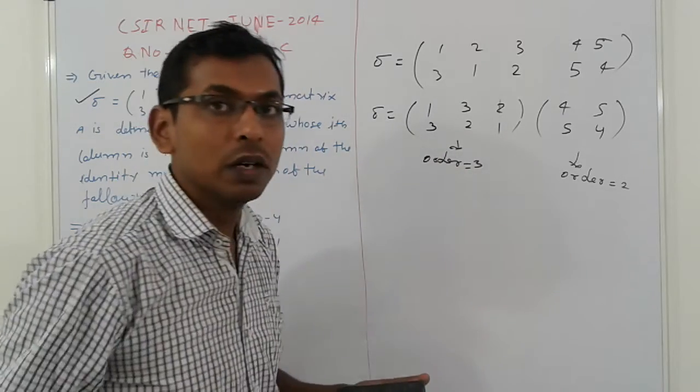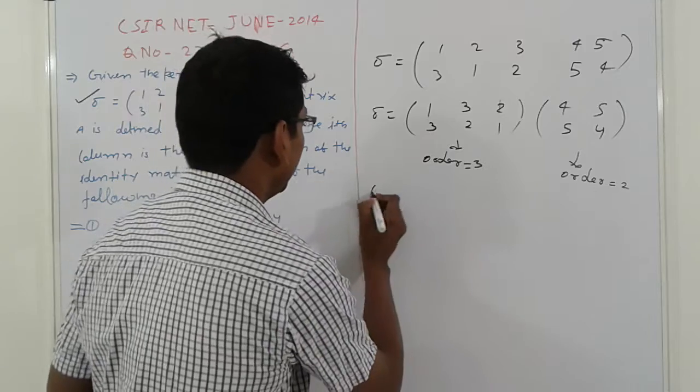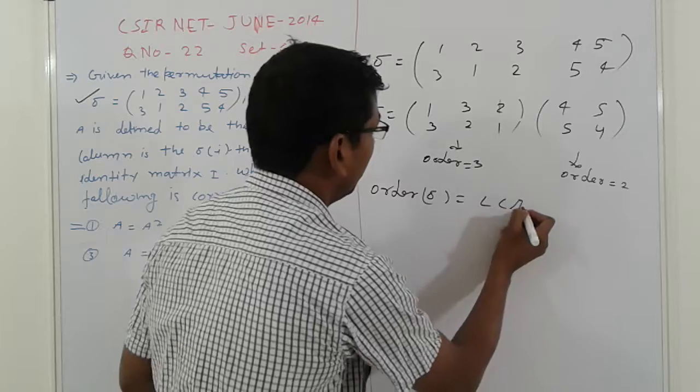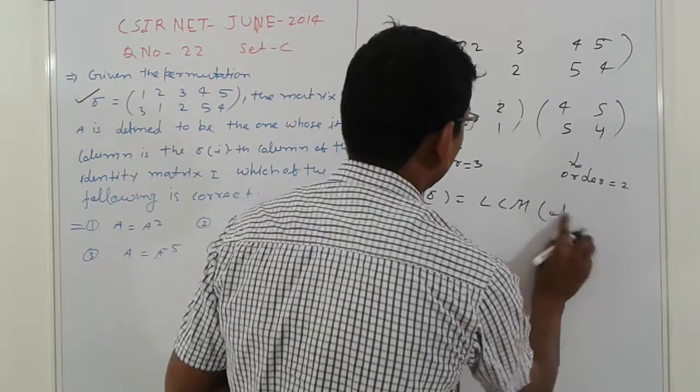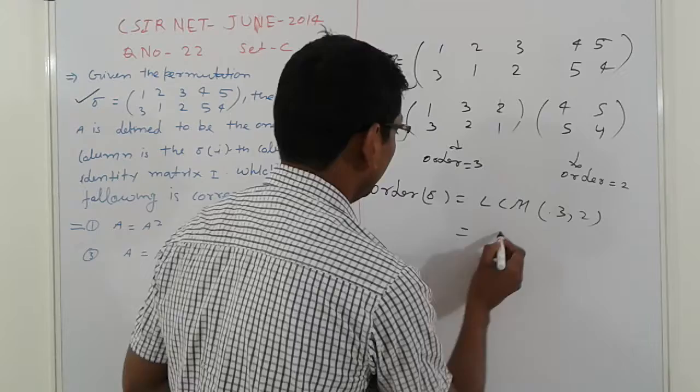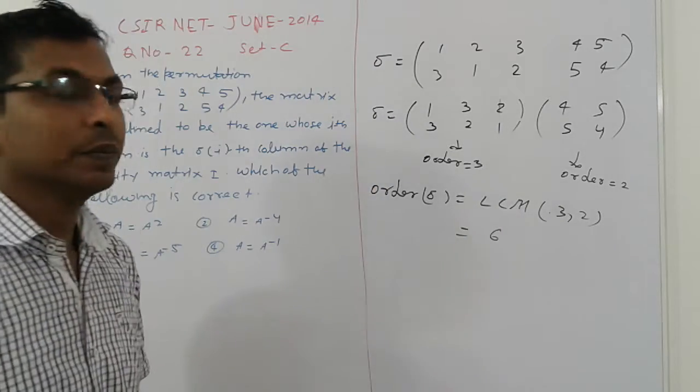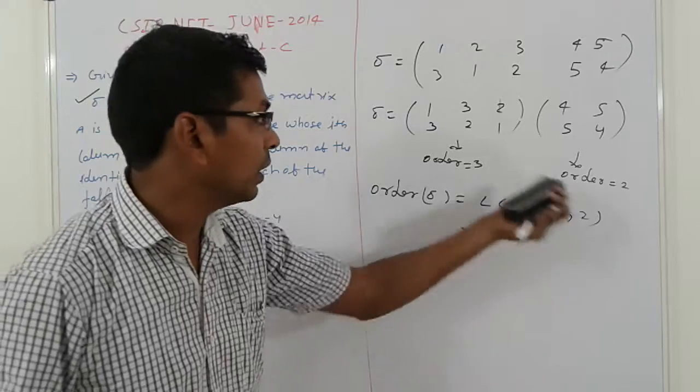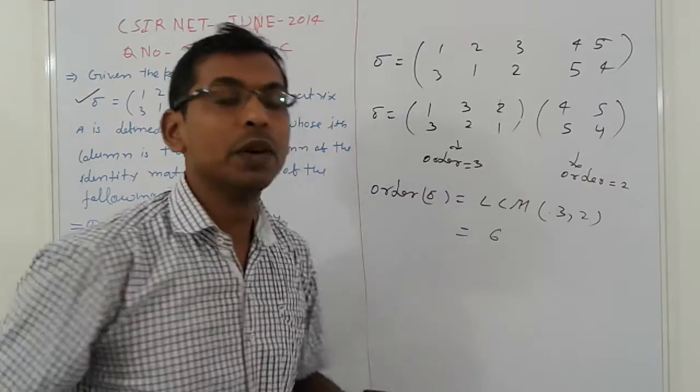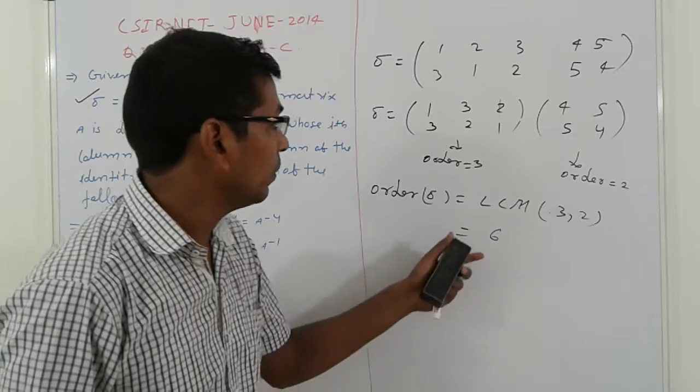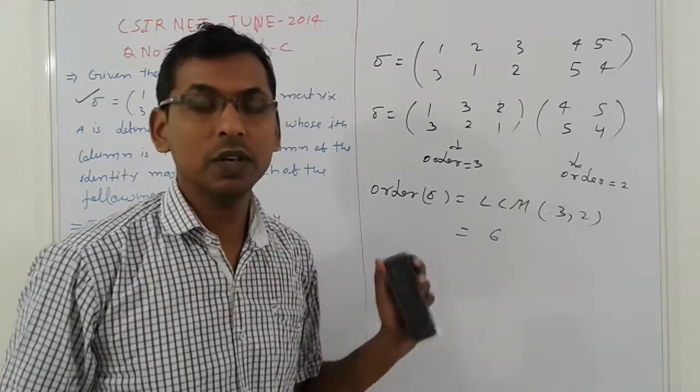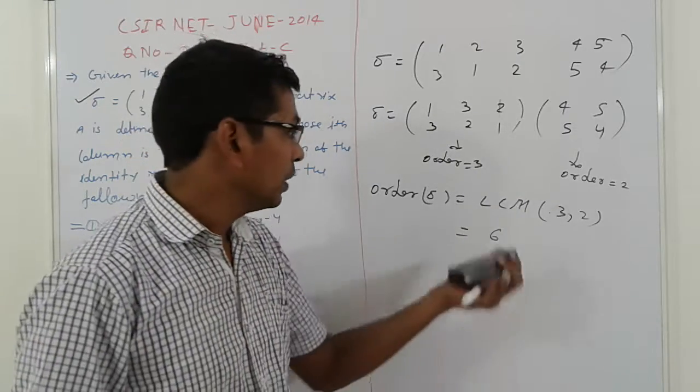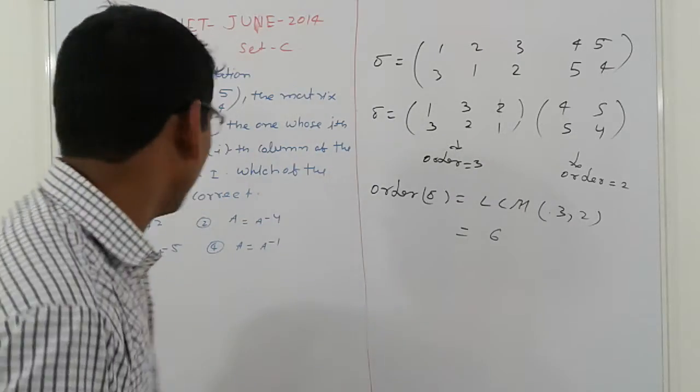That is important. Order 3 and order 2. Total order, what is the order? Order of this equals LCM of 3 and 2. That is important: 6. This is the method to find the order of any permutation in a permutations group. Permutations given in that format. How do you find the order? LCM of this. First, disjoint cycle method, and then find out the order of cycles. That is the order.